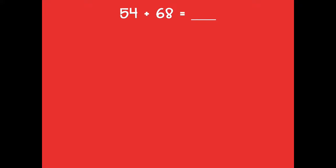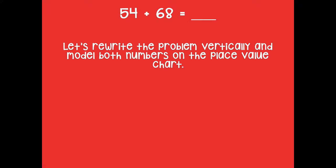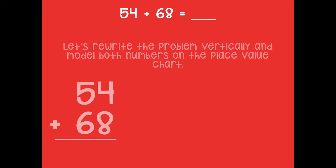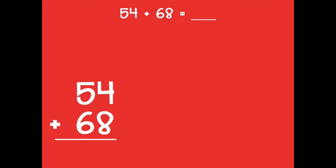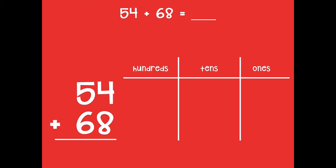Here's our first problem: 54 plus 68. Let's rewrite this problem vertically and model both numbers on the place value chart. For this first problem I'm going to do all the work for you — just pay close attention, because you'll have problems to do on your own in a minute. Make sure you line your numbers up in the ones place: the four and eight should be together, and in the tens place the five and six should be lined up on top of each other.